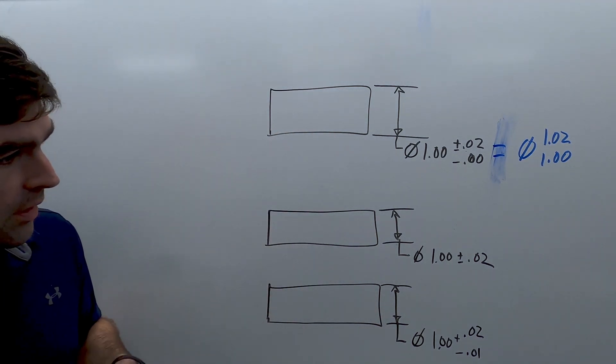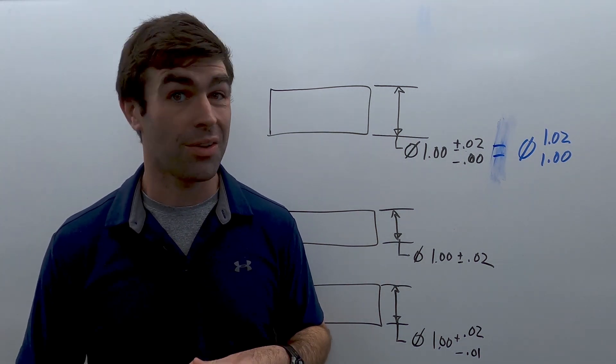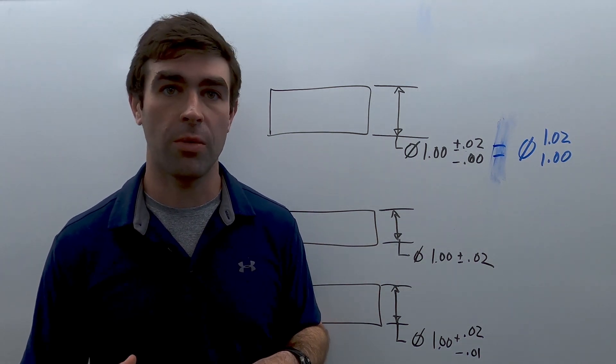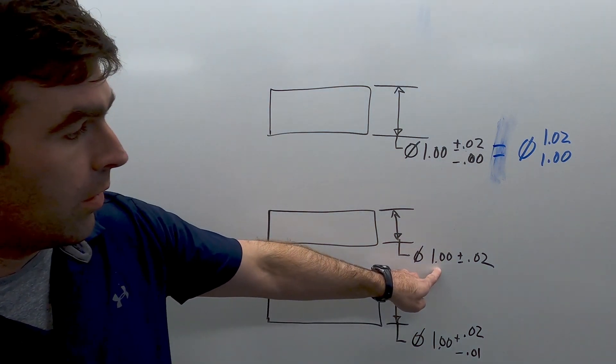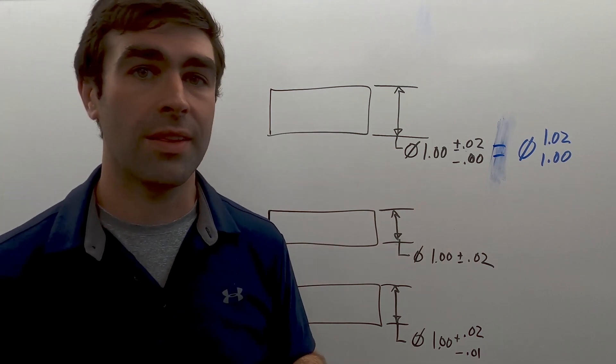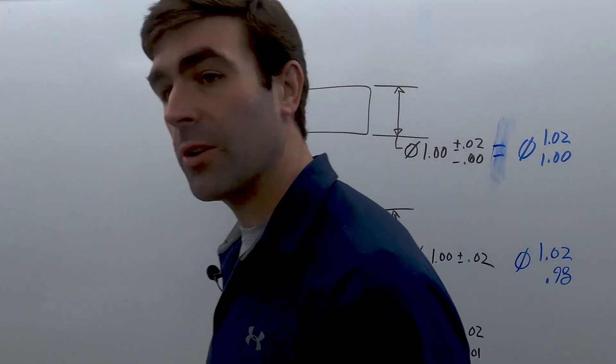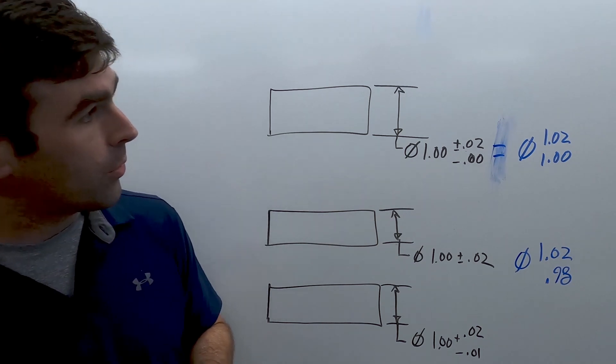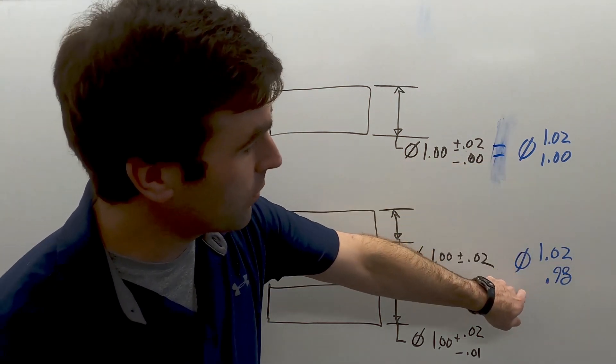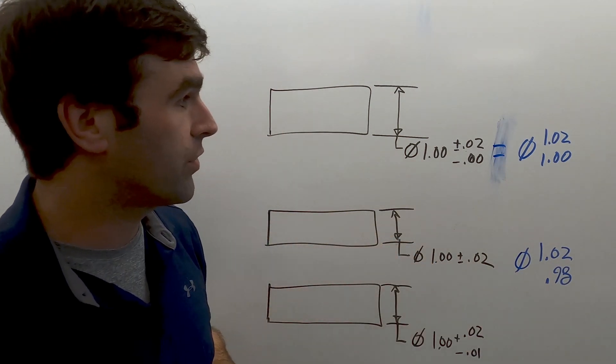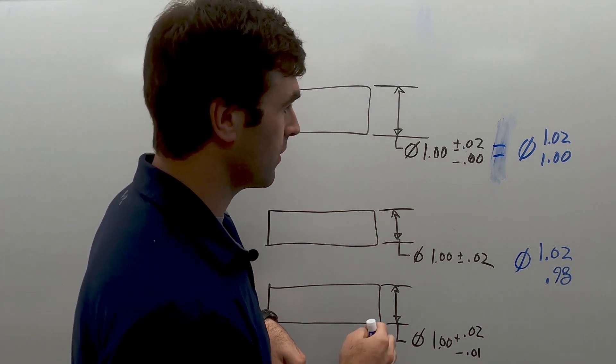The next one is our bilateral equal. You'll see these all the time. Some people call them symmetric dimensions. So 1.0 plus or minus 20 thou. So if we wrote this with limit dimensions it would look like that. So in this one we have 20 thou of total tolerance. This one we have 40 thou of total tolerance. You have to look pretty close at these to spot the difference.